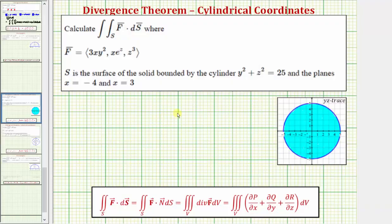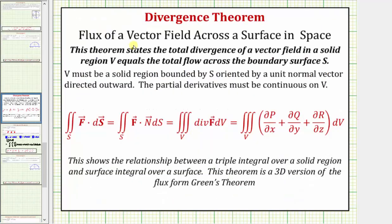Before we set this up though, let's review the divergence theorem. The divergence theorem states the total divergence of a vector field in a solid region V equals the total flow across the boundary surface S, where V must be a solid region bounded by S oriented by a unit normal vector directed outward.